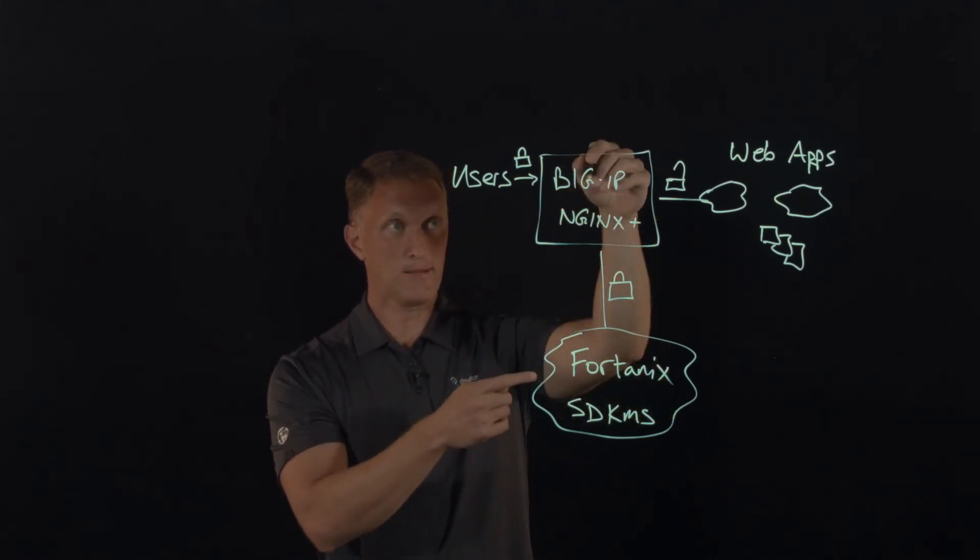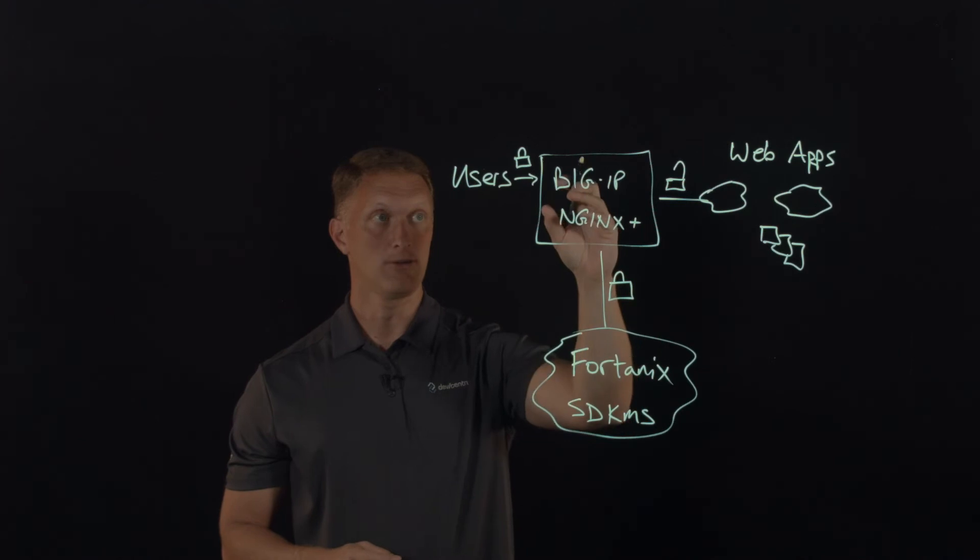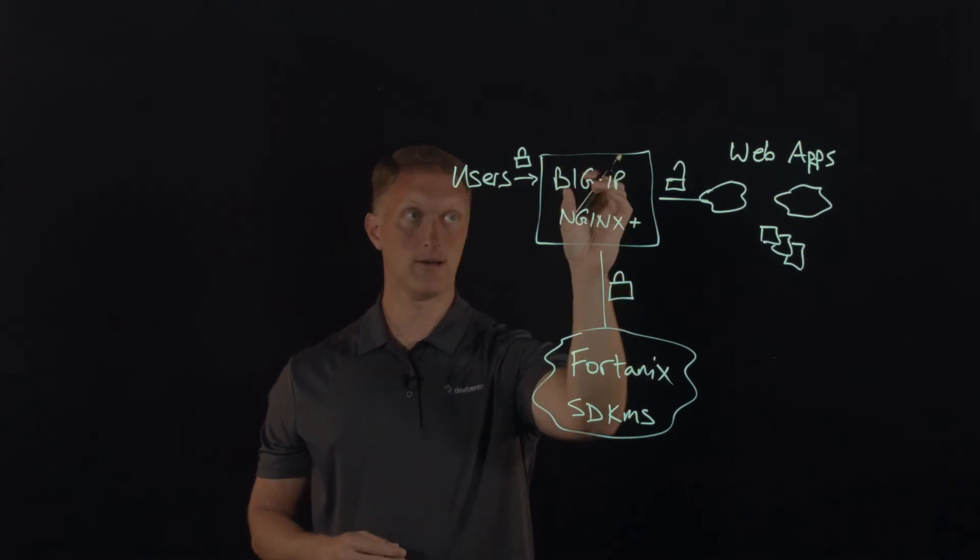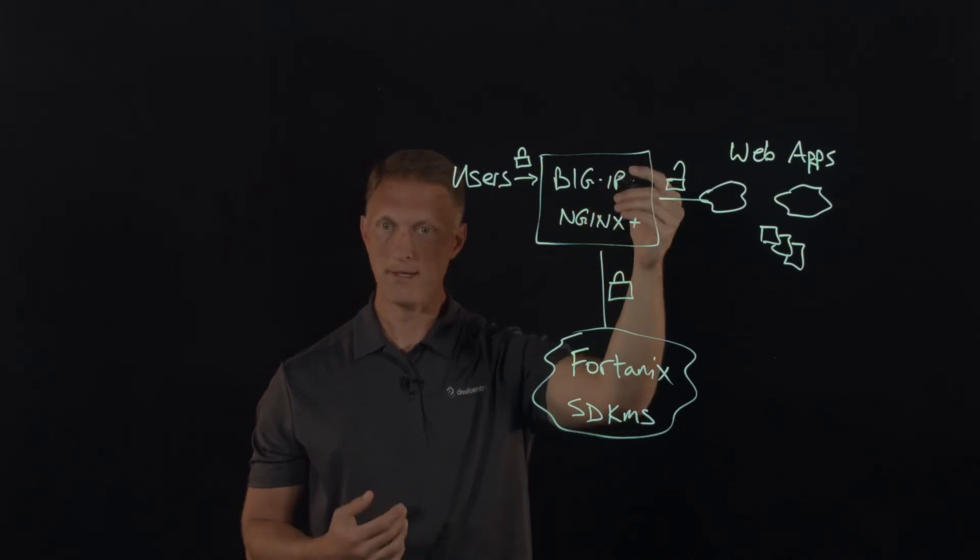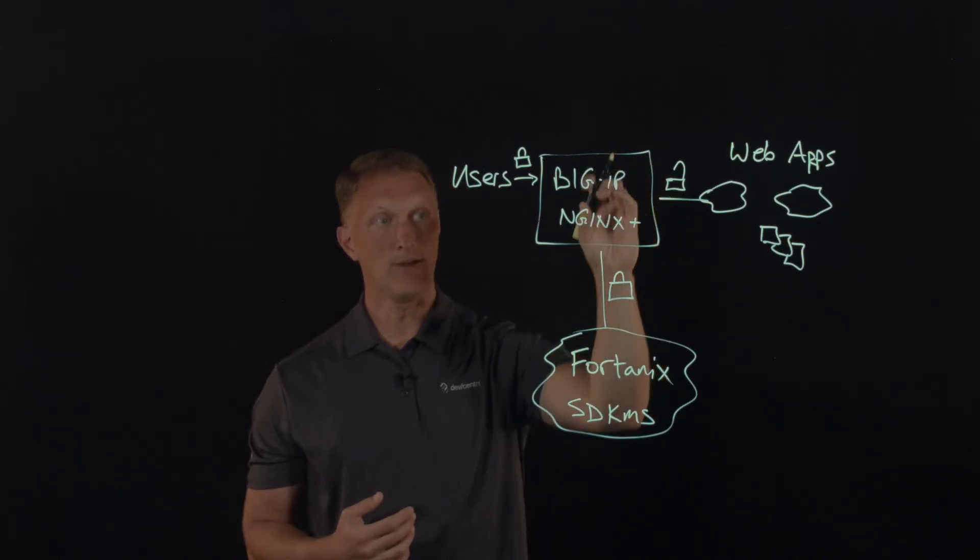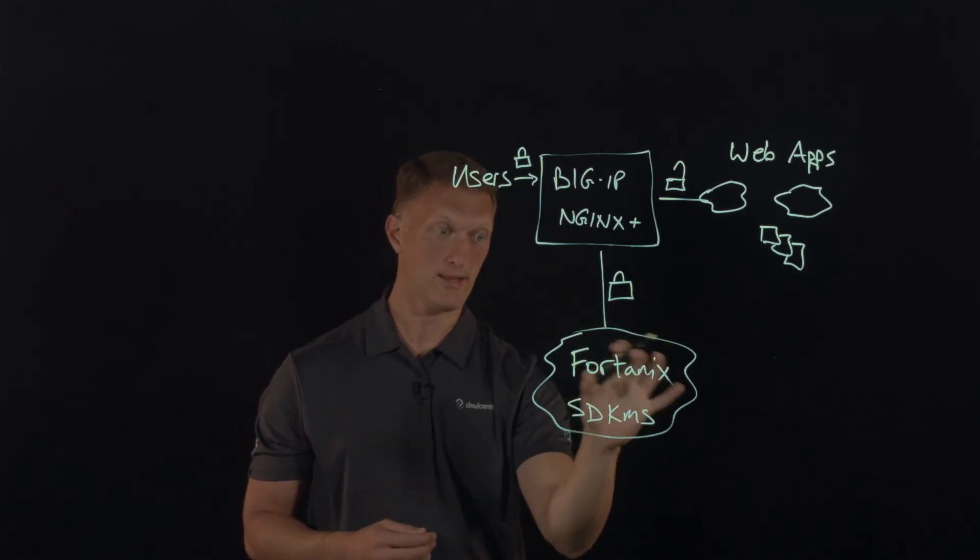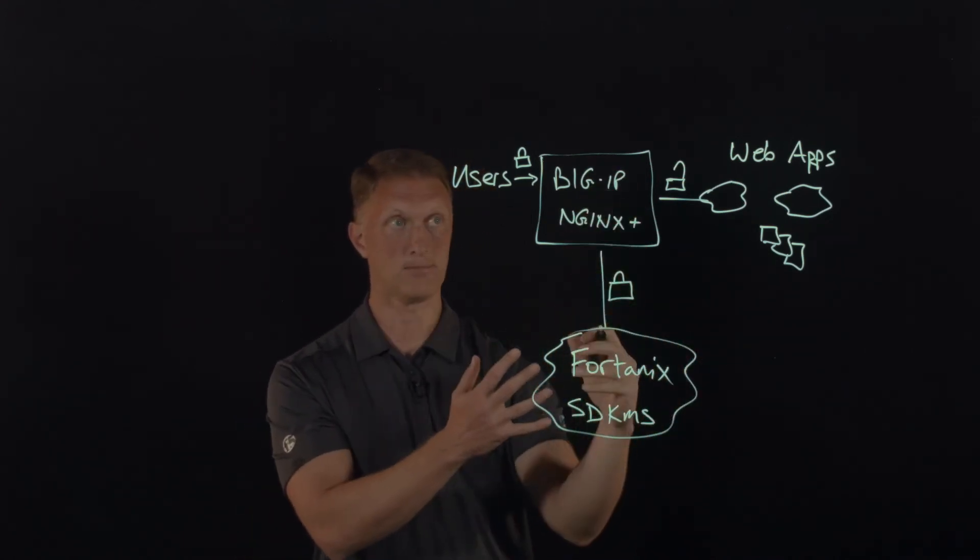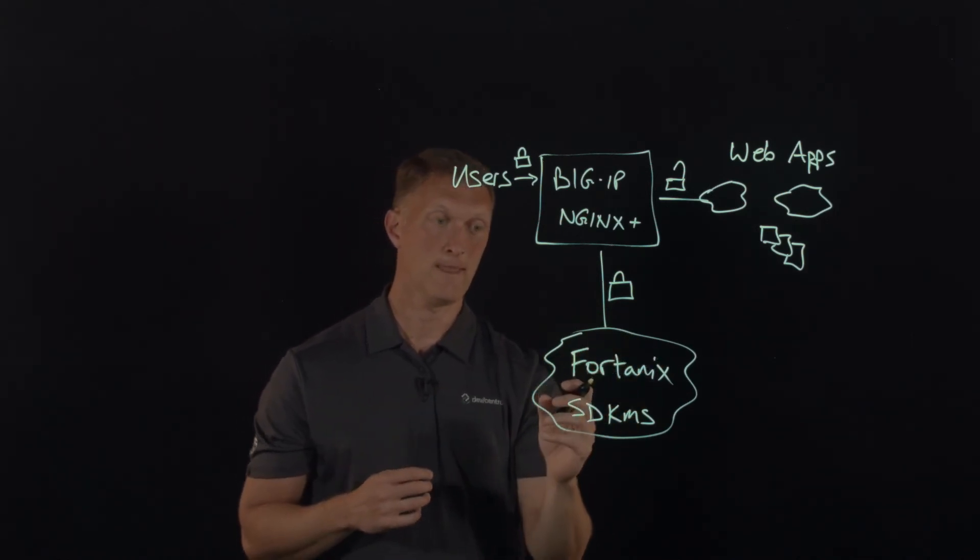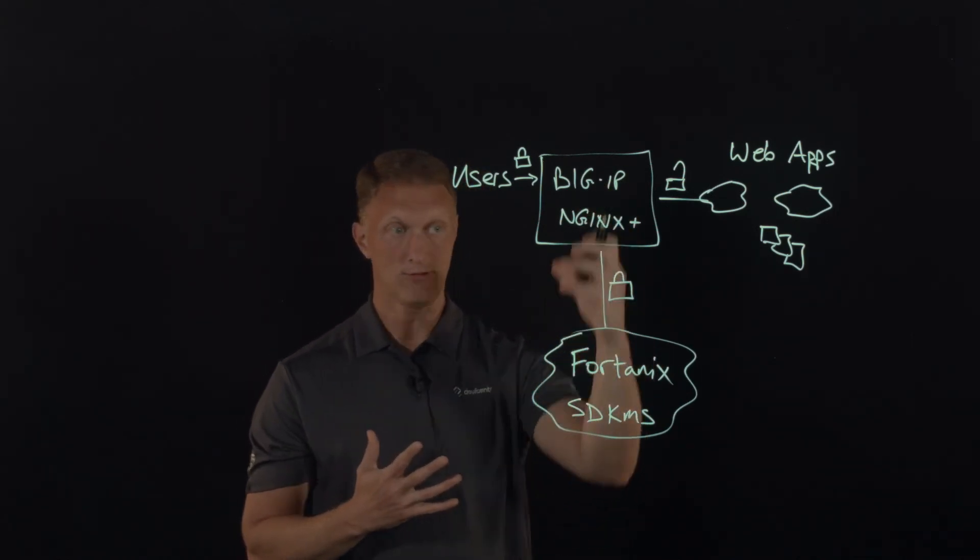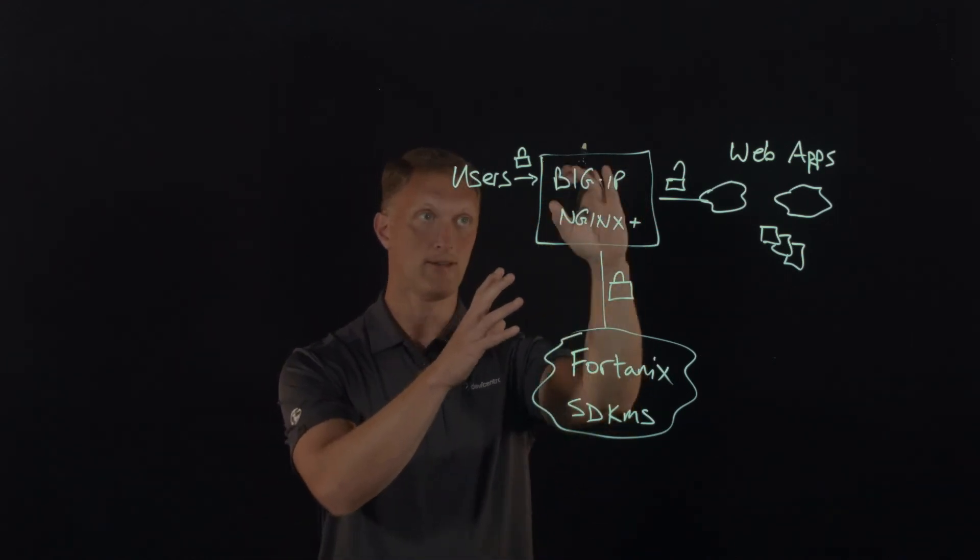So effectively what happens here is you, in order to connect Big IP or NGINX plus to Fortanix, you install a plugin here on Big IP or NGINX plus. So it's an RPM download. You take advantage of Fortanix's PKCS 11 libraries that they offer and they offer more than that, but in this case, Big IP, you would take advantage of the PKCS 11 libraries. And then you set up the network HSM configuration here on Big IP.